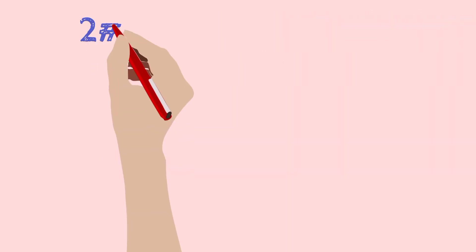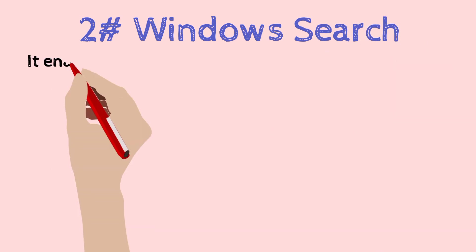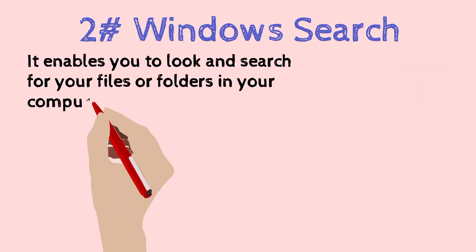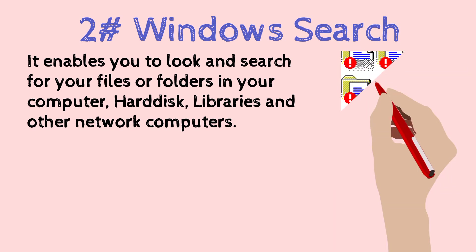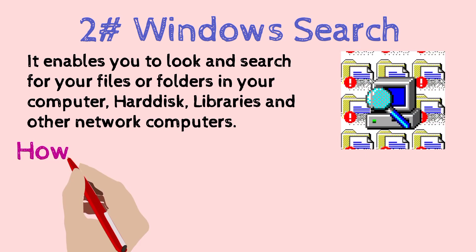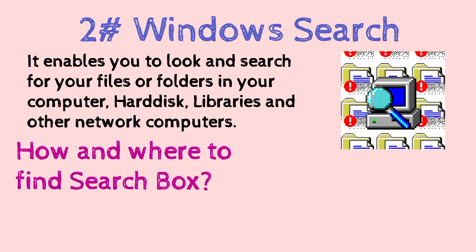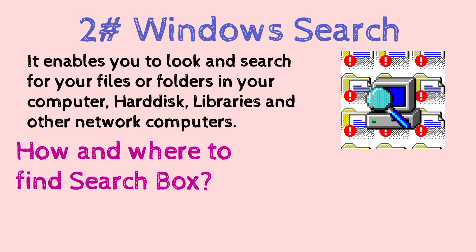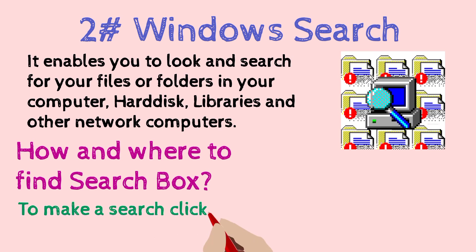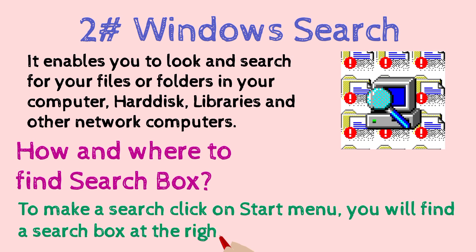The second feature is Windows Search. It enables you to look for and search for files and folders in the computer hard disk, library, and other computer networks. To make a search, click on the Start menu and you will find the search box in the bottom right corner.